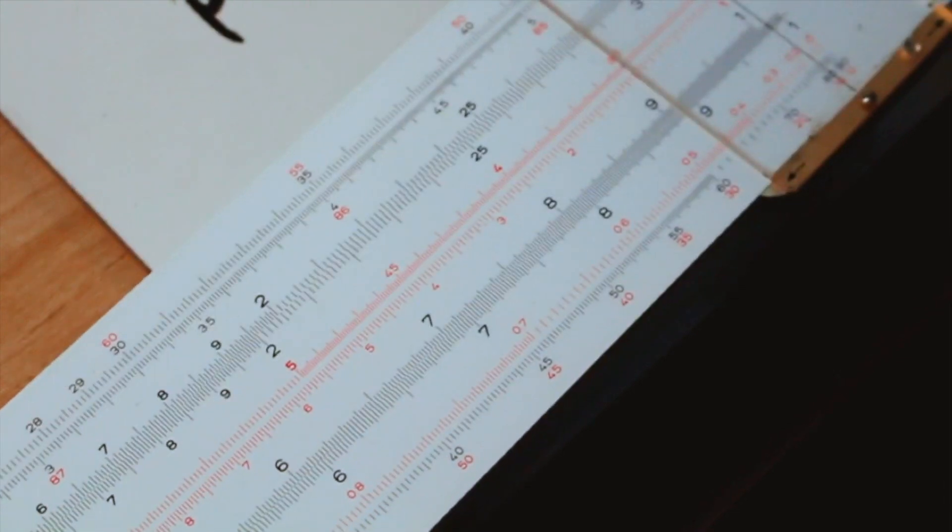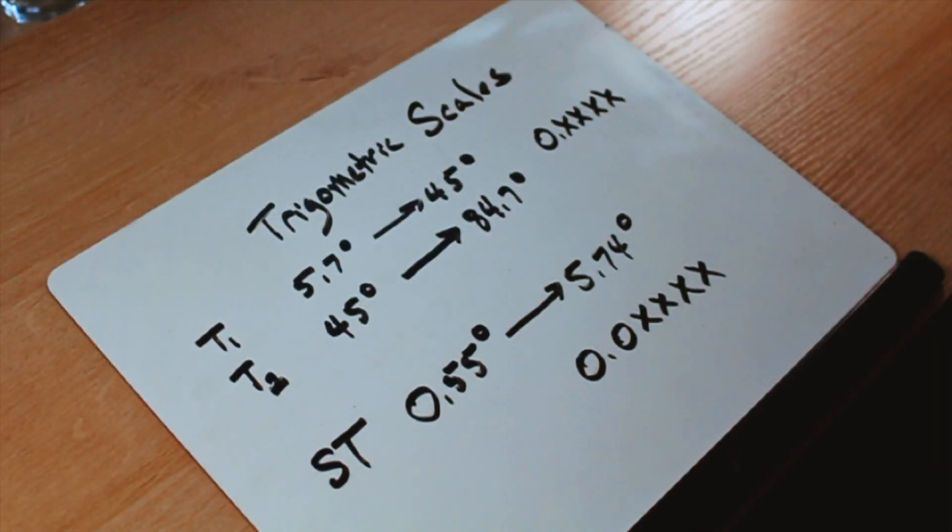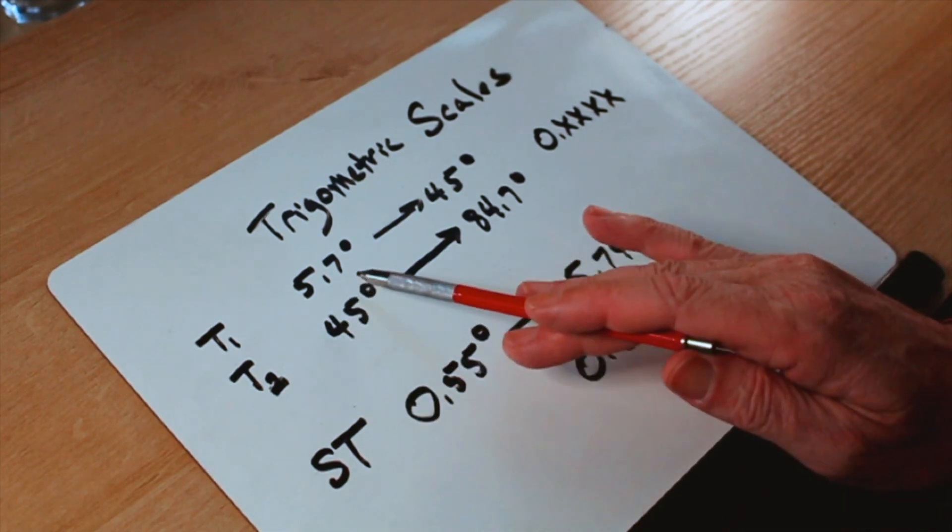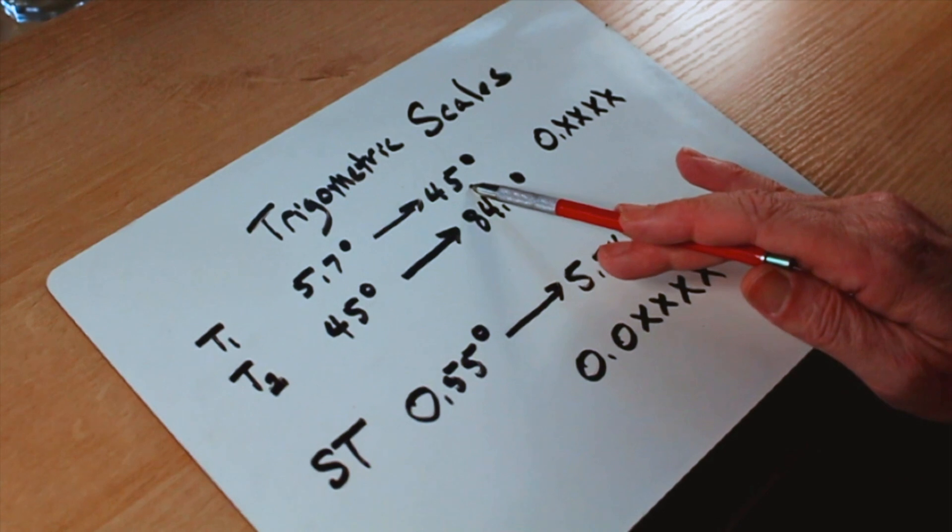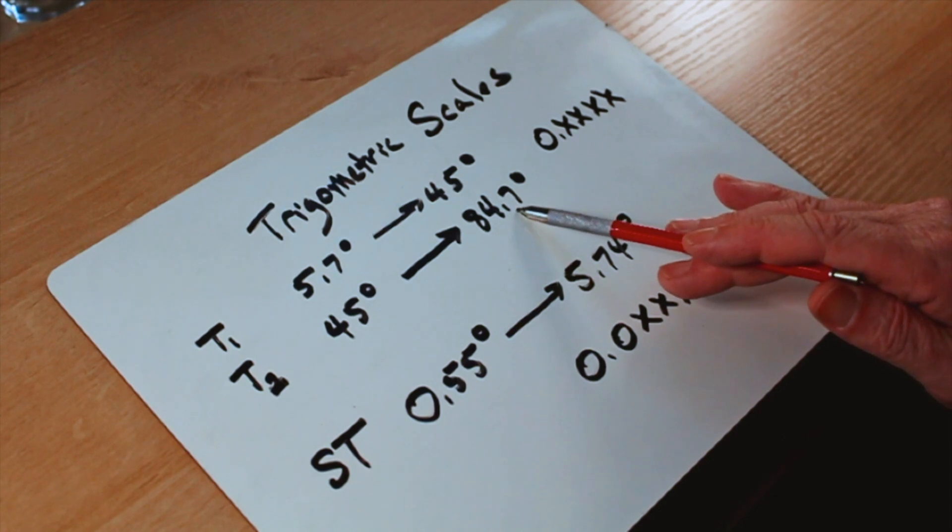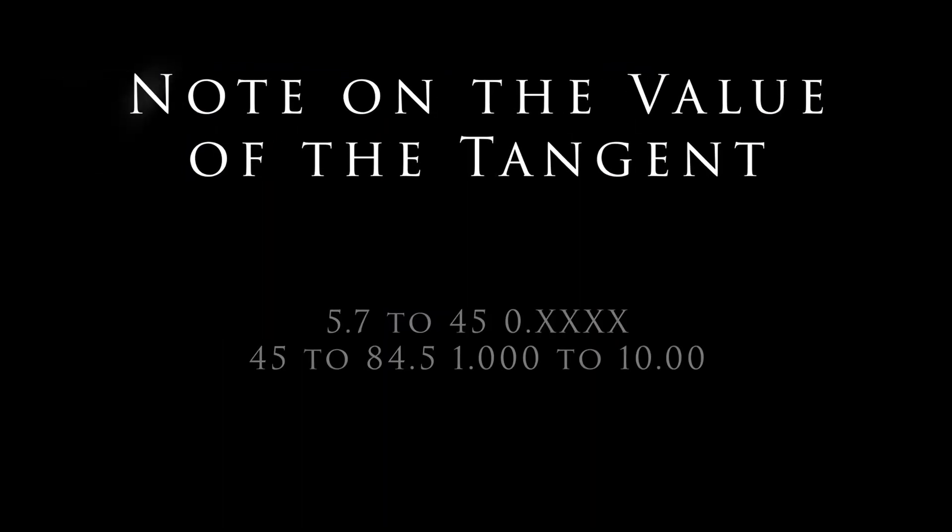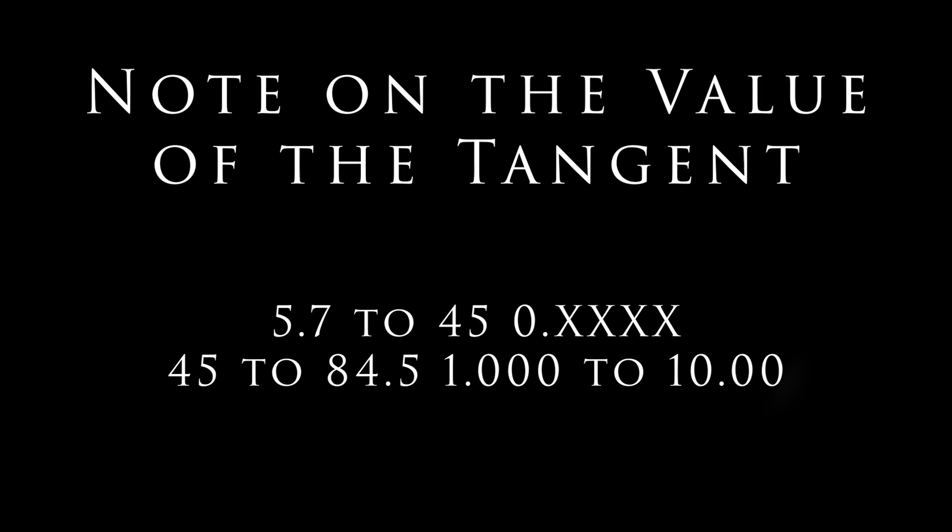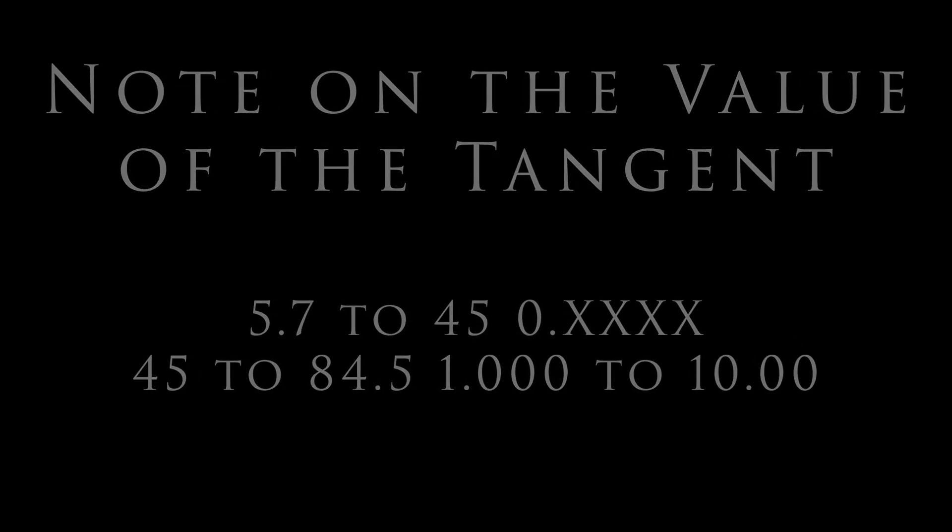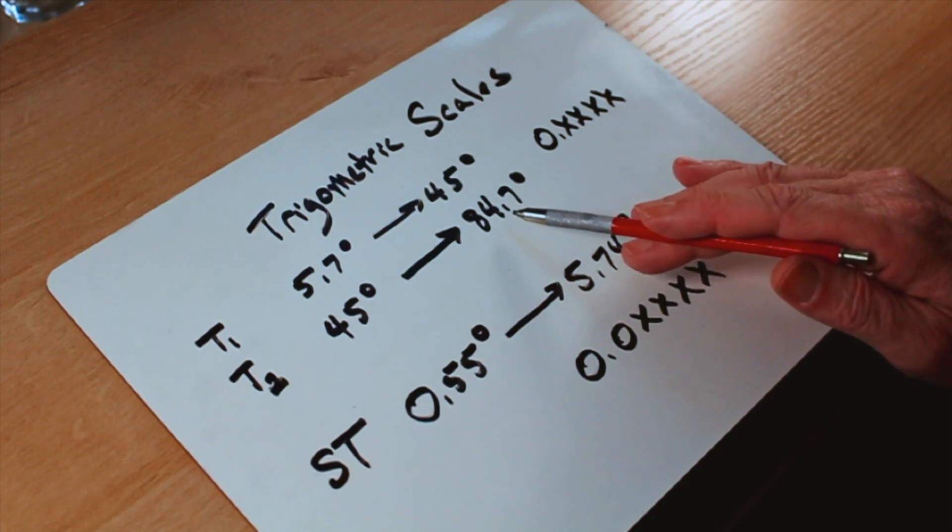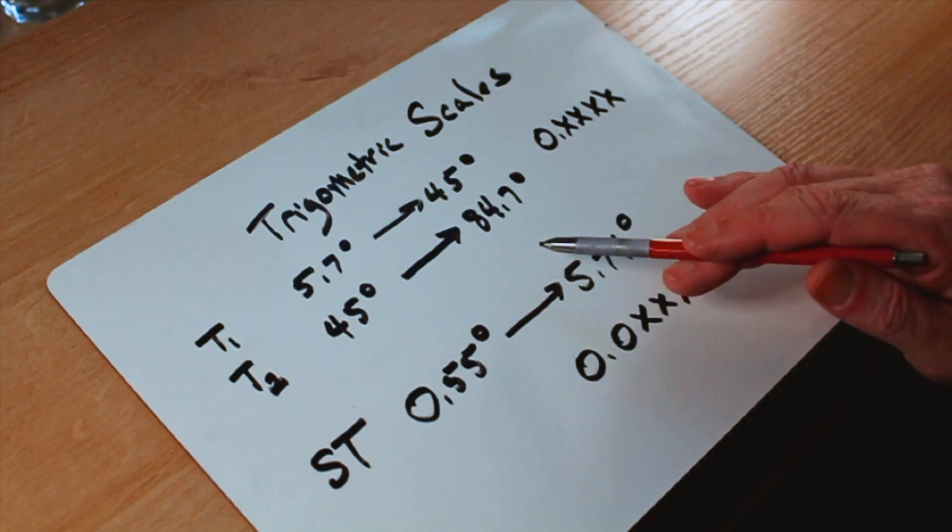Now the next scales that we'll have a look at are the T-scales, and they're for tangent. On some slide rules, they're divided into two T-scales, a T1 and a T2. One will go from 5.7 degrees up to 45 degrees. Another will go from 45 degrees up to the max of about 84.7 degrees. The reason the slide rule stops here on the tangent is as you approach 90 degrees, the tangent rapidly goes to infinity.